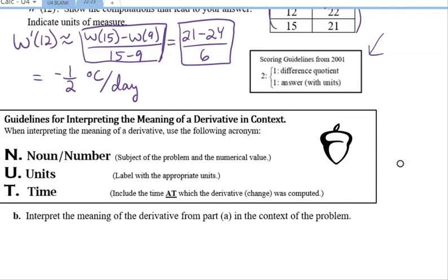So here is a handy-dandy acronym to help you remember to have all of the parts of your interpretation statement, and it is NUT, which is a bit comical, but also convenient because I don't know if you recognize this, but this is the College Board Acorn, which is a NUT.